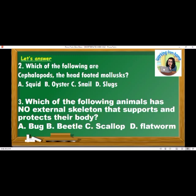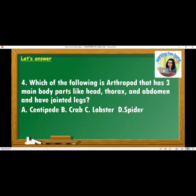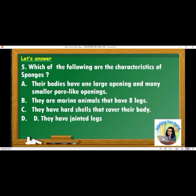Number 3: Which of the following animals has no external skeleton that supports and protects their body? A — bug; B — beetle; C — scallop; D — flatworm. Number 5: Which of the following are the characteristics of sponges? A — their bodies have one large opening and many smaller pore-like openings; B — they are marine animals that have eight legs; C — they have hard shells that cover their body; D — they have jointed legs.